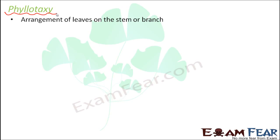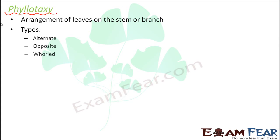There are different ways in which leaves can be arranged on the stem. Broadly, there are three types of phyllotaxy: alternate phyllotaxy, opposite phyllotaxy, and whorled phyllotaxy. We will talk about each of these types in detail.